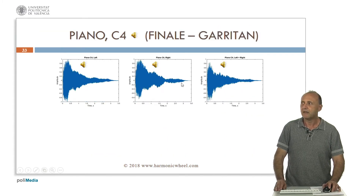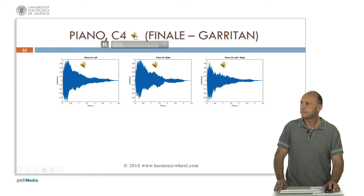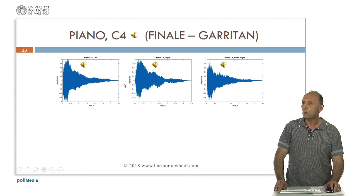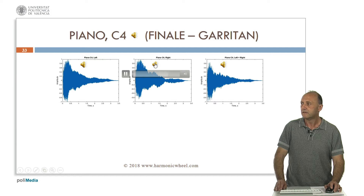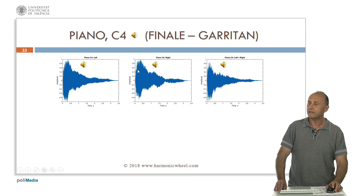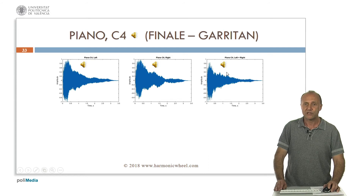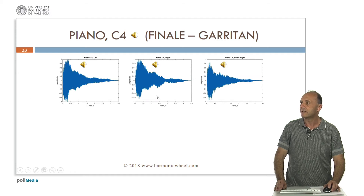Now let's consider real instruments. This is a piano generated by the Finale program with Garritan instruments. This is a stereo sound, which means that we receive two signals: one with one ear (the left channel) and another signal with the other ear (the right channel). So we perceive two different signals at the same time. Technically, if we want to convert the stereo sound into a mono sound, what we do is sum the two channels. In each case we can see that the envelope is a bit different, and the waveform also changes with time.